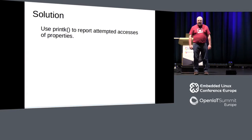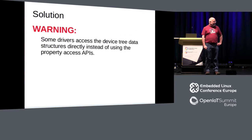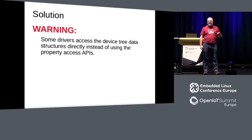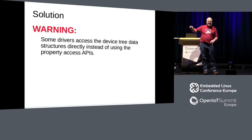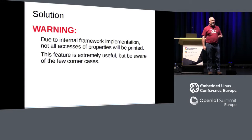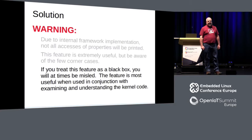Being a typical kernel developer, my very first tool is printk. A very simple, incredibly simple tool. I put those printks in the APIs for accessing properties — which leads to a slight side effect in that some code accesses the device tree structures directly instead of through the APIs. So you have to be a little cautious about these results. You can't just look at the report and say 'that's broken' — you have to say 'that might be broken, let me investigate more.'